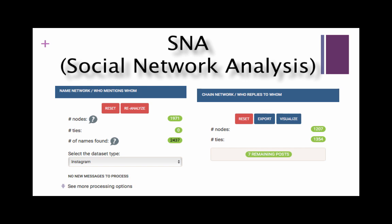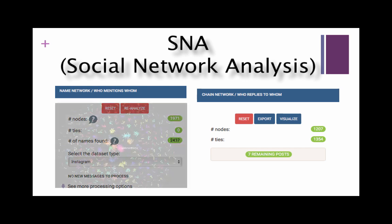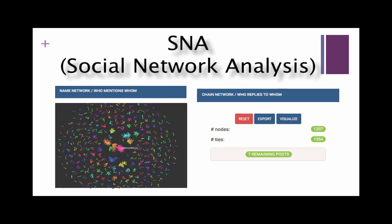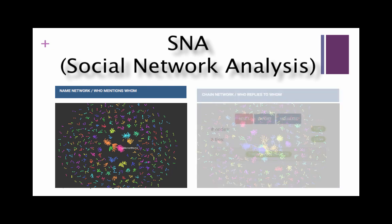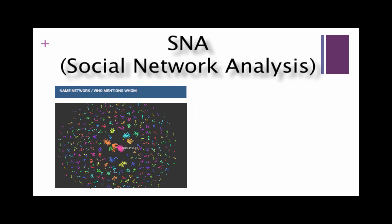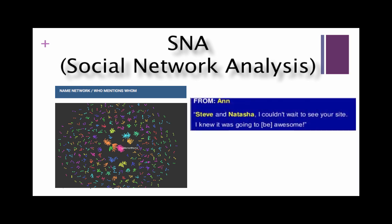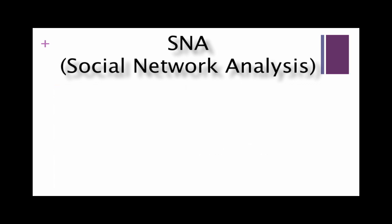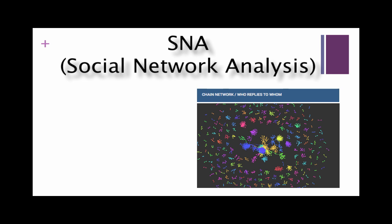There are two types of social networks that Netlytic can visualize: name networks and chain networks. Name networks are concerned with who mentions whom. This approach identifies personal names mentioned in the body of each message and builds a network which connects the sender to everyone mentioned in his or her message. A chain network is built based on information about direct interactions among online participants, such as direct replies.